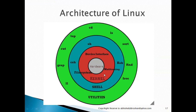In this architecture, at the core you can see there is something called hardware. On top of this hardware there is something called the kernel. On top of the kernel there is something called the shell, and on top of the shell there is something called utilities.